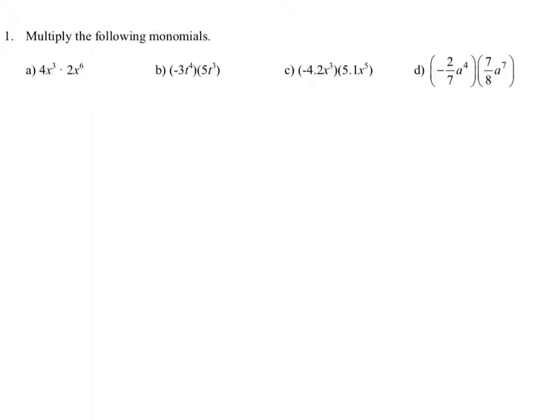Let's multiply the following monomials. We begin with 4x to the third times 2x to the sixth. When we're multiplying monomials together, we begin by multiplying the coefficients together: 4 times 2, and then we multiply the variables with the same base together, x to the third times x to the sixth, using the laws of exponents from the previous section.